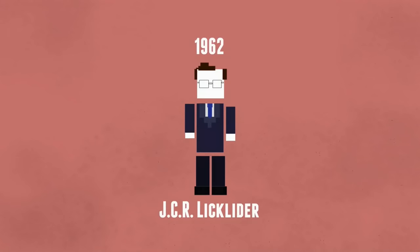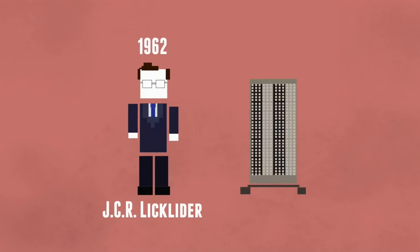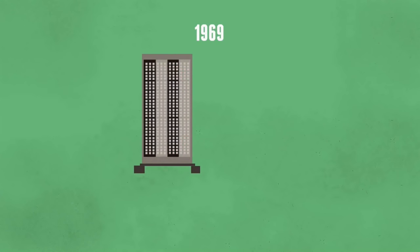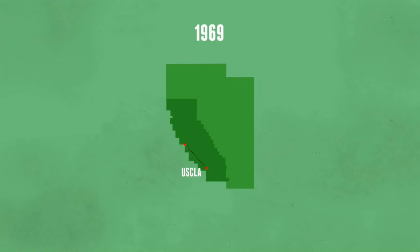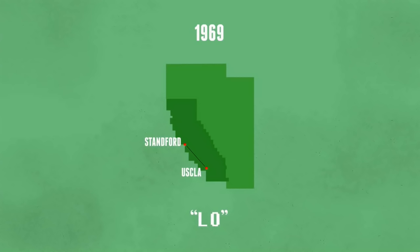a scientist named J.C.R. Lickletter proposed the idea of a network of computers that could talk to one another. In 1969, the first ever message was sent from one computer to another over the ARPANET, the government's computer network at the time. ARPANET stands for Advanced Research Projects Agency. One was located in a research lab in UCLA, and the other at Stanford. All the message said was 'log in,' and it didn't fail to crash the network. Stanford only received the first two letters of the message. But hey, you gotta start somewhere.